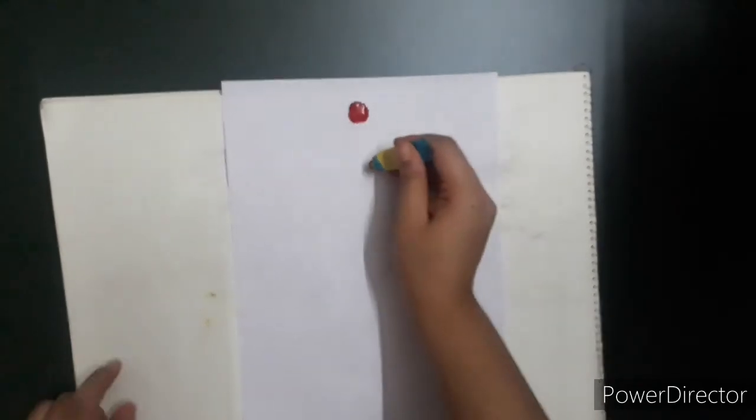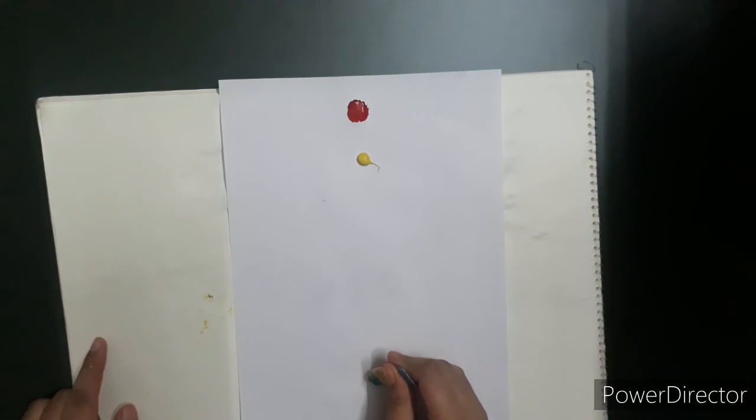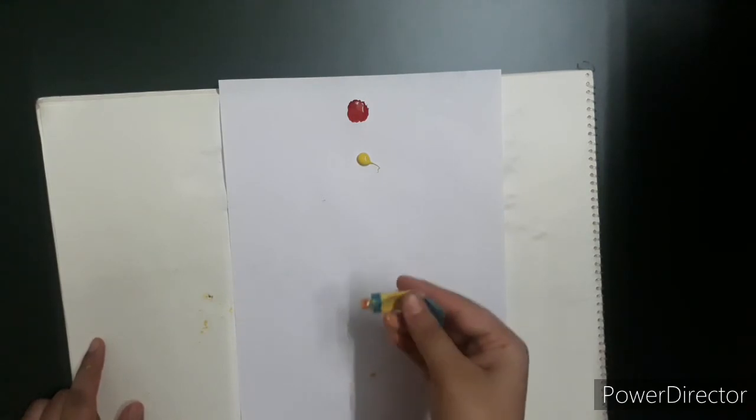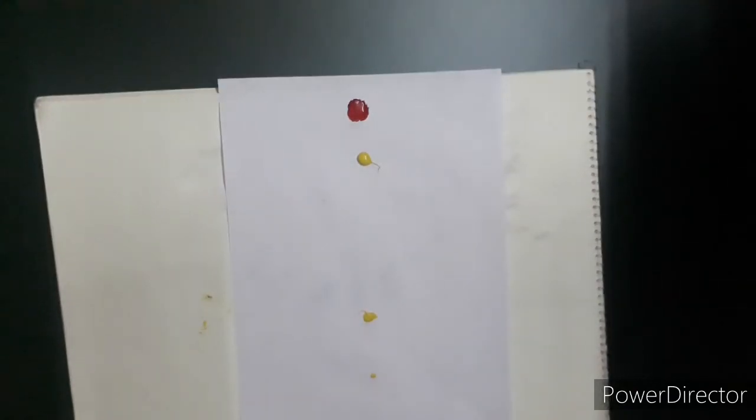So I have added red dollops. Now I will add dollops of blue color.